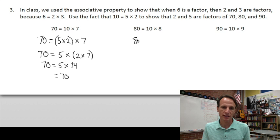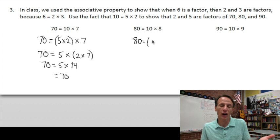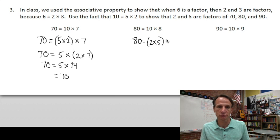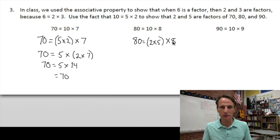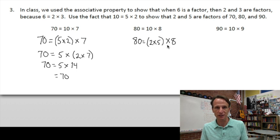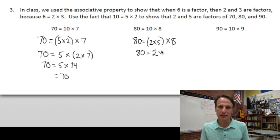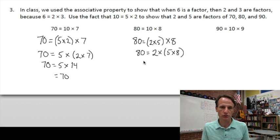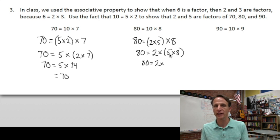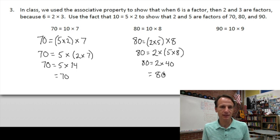The same thing for eighty: eighty is ten times eight, and ten is two times five. So eighty equals two times five in parentheses, times eight. Using the associative property, eighty equals two times five times eight. What's five times eight? It's forty. So eighty equals two times forty — yes, indeed. That means five and two are factors of eighty, because ten is a factor of eighty.